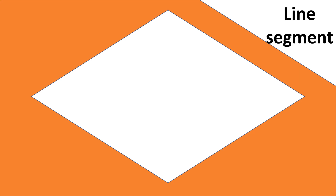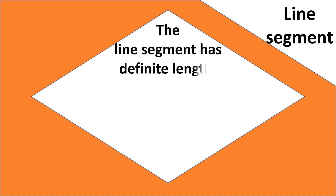A line has indefinite length, but a line segment has definite length. For example, from A to B we have line segment AB, and we can measure this length with the help of a ruler.